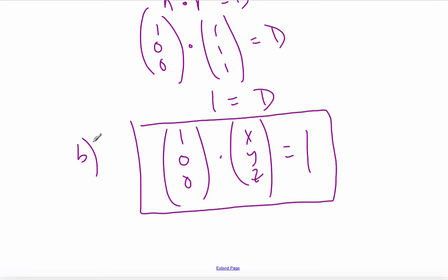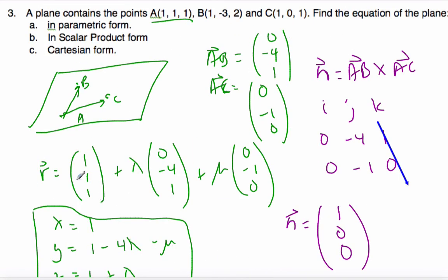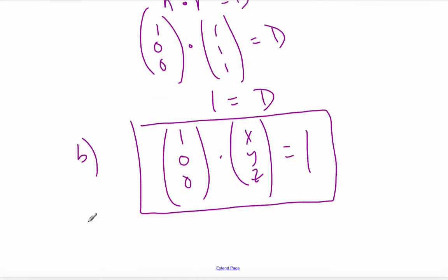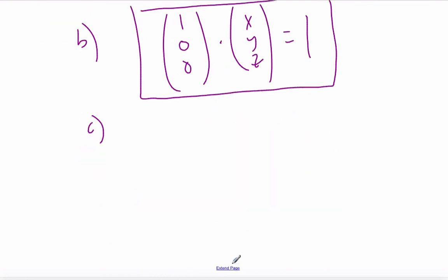And finally, I want to find the Cartesian form, which means I take my scalar product form and I multiply it out. And it ends up being X is equal to 1, because those are all 0. This is my equation of the plane, X equal to 1.